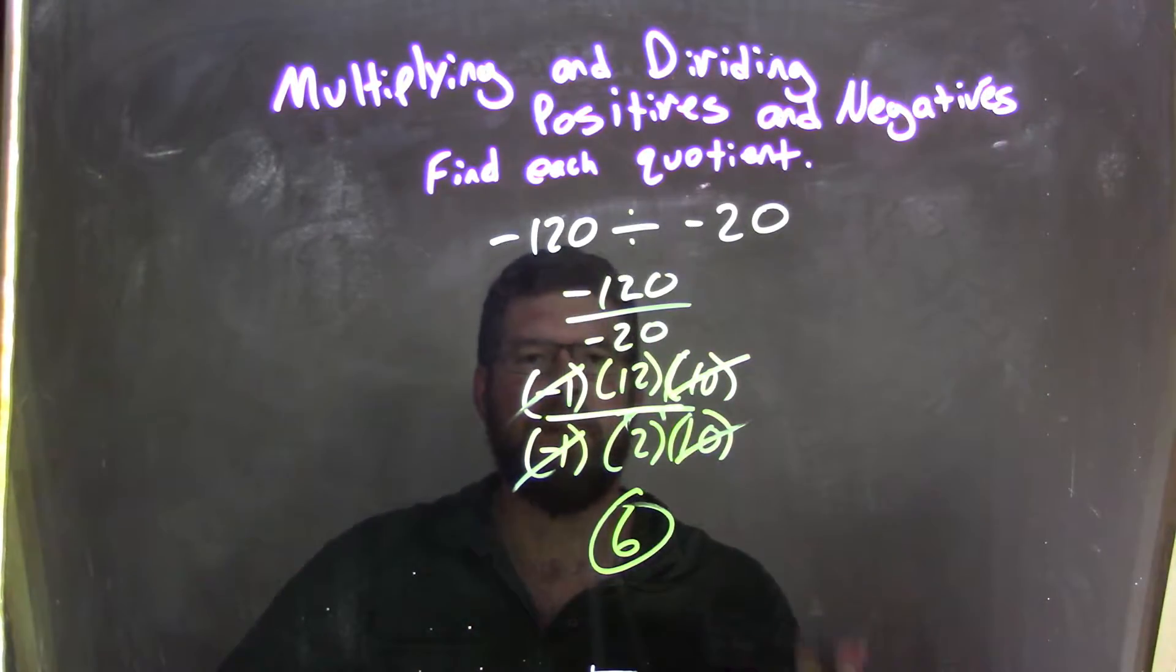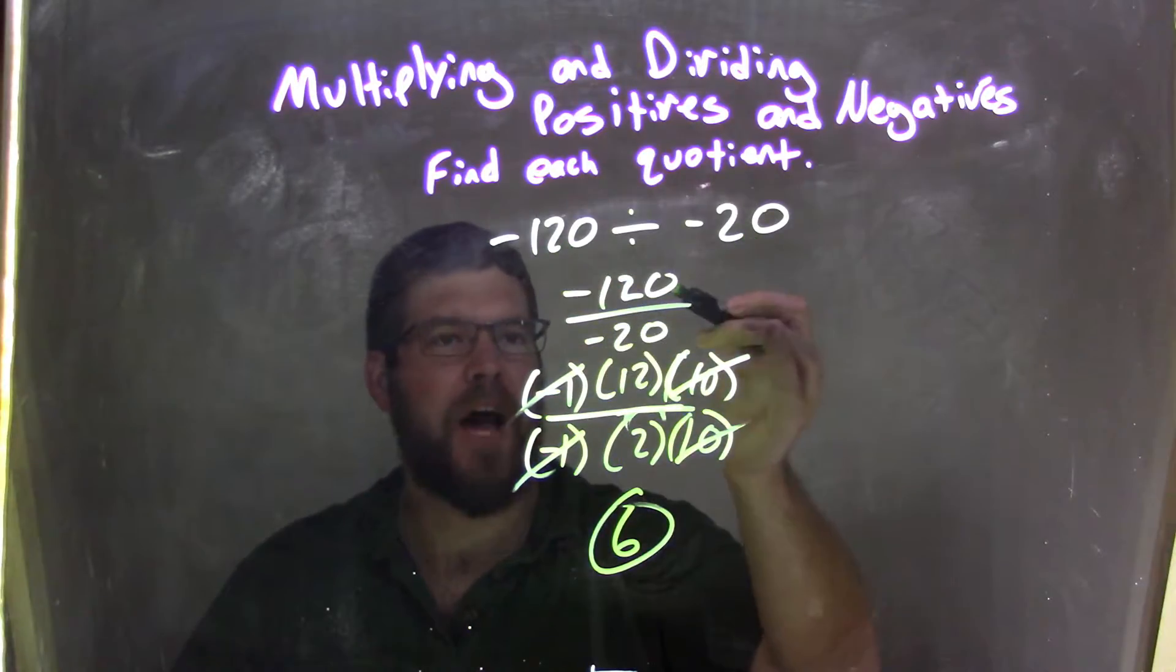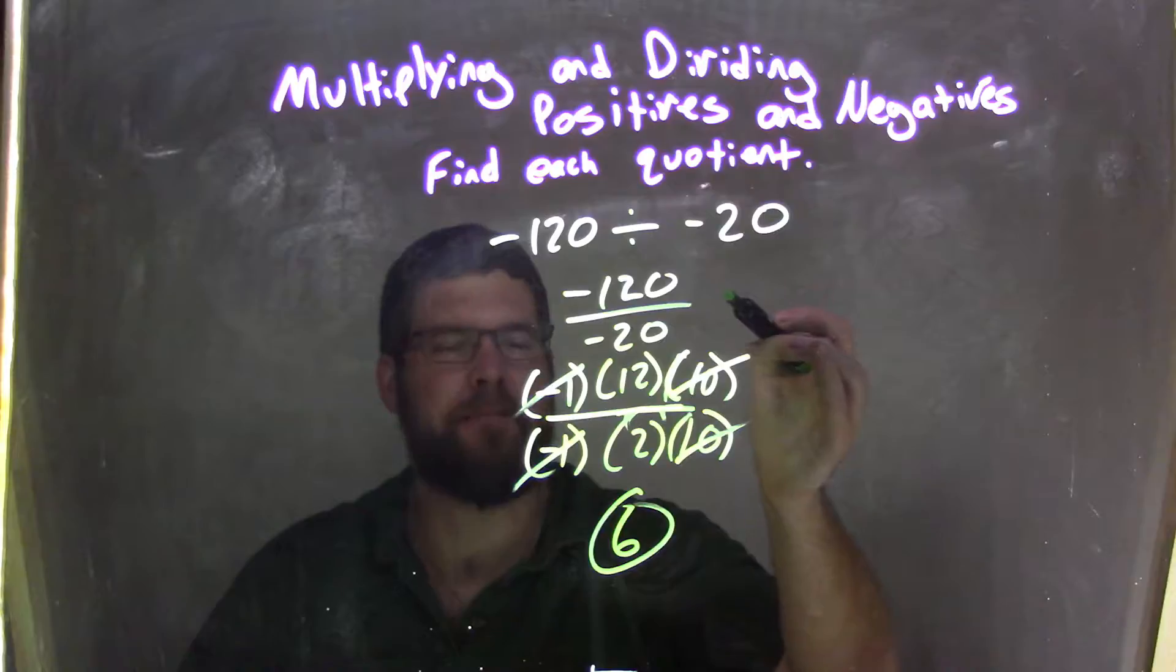And that's my final answer. So, again, let's recap. We had negative 120 divided by negative 20. I wrote it as a fraction, right here, right? My first step.